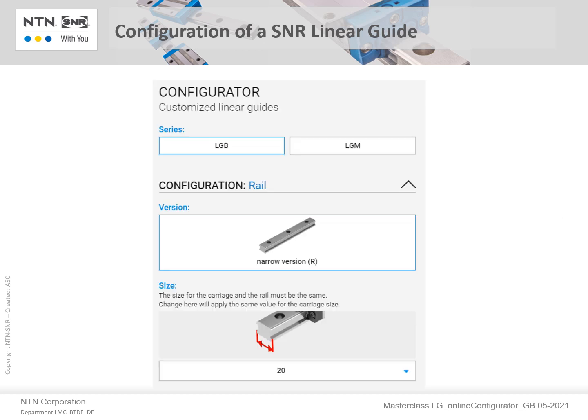Clicking on the Assembled System tab takes you to the Configurator function. The existing presets of each feature can be changed within the scope of the product range. To begin with, the series is selected — in this case, LGB Standard Guide. Then configuration of the rail is selected in several parts.